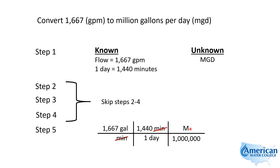Now my units are million gallons per day. So I'll take 1,667, multiply it by 1,440, divide it by a million, and that gives me 2.4 million gallons per day, or MGD.